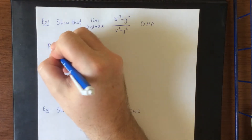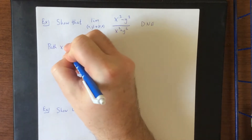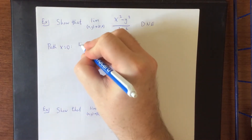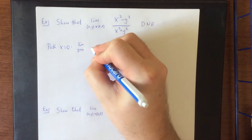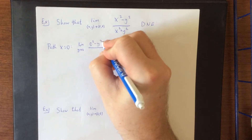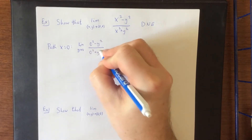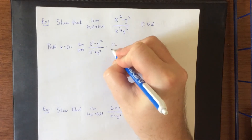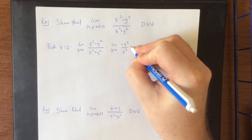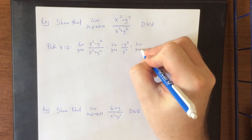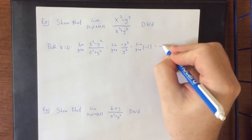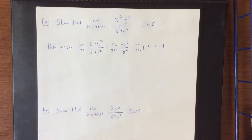Let us attempt to use the path x equals 0, which is simply a vertical line passing through (0, 0). We substitute x = 0, giving us 0 squared minus y squared over 0 squared plus y squared. Simplifying both numerator and denominator, we get negative y squared divided by y squared, which simplifies to negative 1. Taking the limit as y approaches 0 doesn't change anything since we simply have a constant.